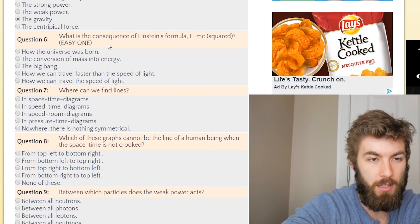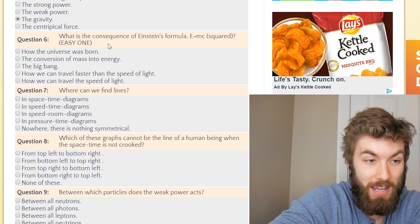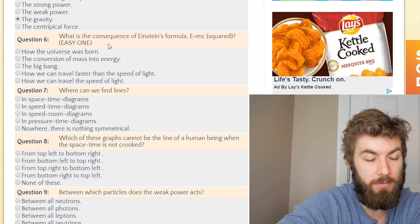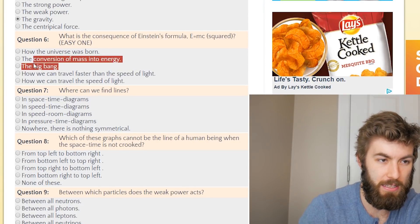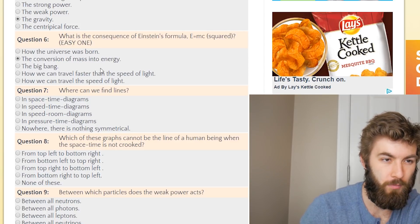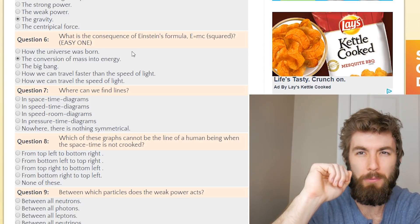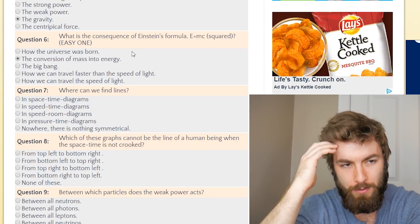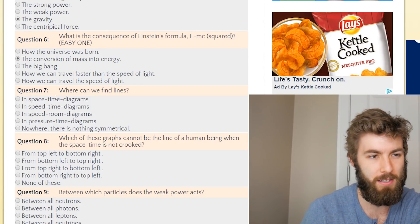What is the consequence of Einstein's formula E equals mc squared? Easy one. How the universe was born, the conversion of mass into energy, the big bang, how we can travel faster than the speed of light, how we can travel the speed of light. So it's not these two, it's not this one, and it's not that one. Whenever you talk about Einstein's energy momentum relation, physicists get really like, I don't like that, whenever you say mass converting into energy, because really it's saying that they're just proportional to each other. I don't know if converting is always the right word to use. I also don't really care, as long as you know what I'm talking about whenever I say this stuff, that's what matters.